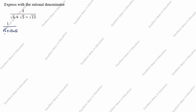You see the denominator — the denominator is given as 3 terms. We need to take 2 of these terms as 'a' and this one we will take as 'b'. Here is a minus sign. Now we will rationalize the denominator: multiply by root 6 plus root 5 plus root 11 divided by root 6 plus root 5 plus root 11.